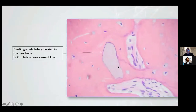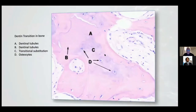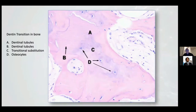This is another image of granules completely surrounded by new bone. In this image, we have a granule of dentine in transition. What does transition mean? Because this granule was previously larger.